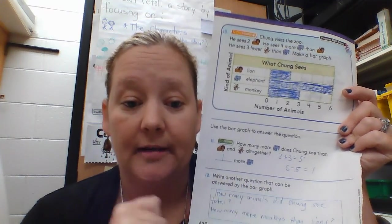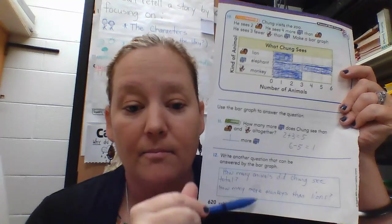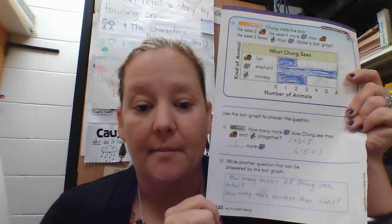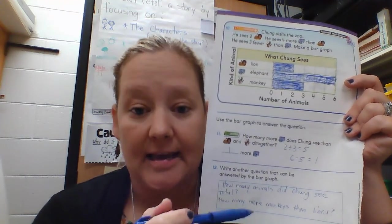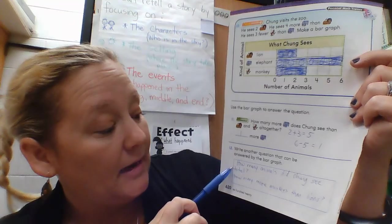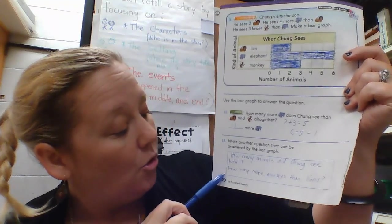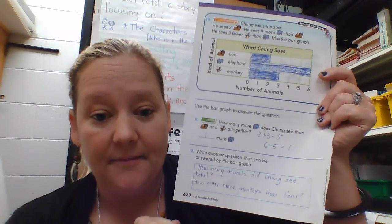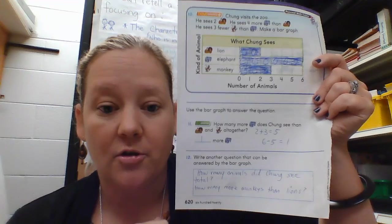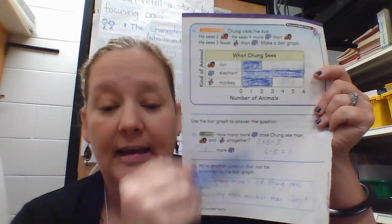Number twelve: write another question that can be answered by the bar graph. There are many questions you could have — I just wrote a couple of examples. As long as you are asking a question that makes sense and refers to the information or data in this graph, I will mark it correct. One example: how many animals did Chung see total — you'd add all three. Another: how many more monkeys than lions. These aren't the only two correct answers.